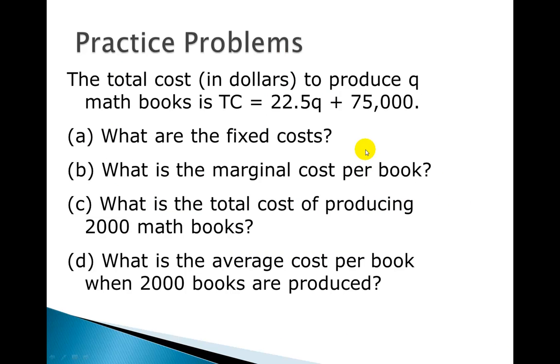Okay, so here's a little problem that we have. We've got total cost in dollars to produce Q math books, so Q is the quantity, is TC equals 22.5Q plus 75,000. So we got a few questions here. What are the fixed costs when we're using this formula?